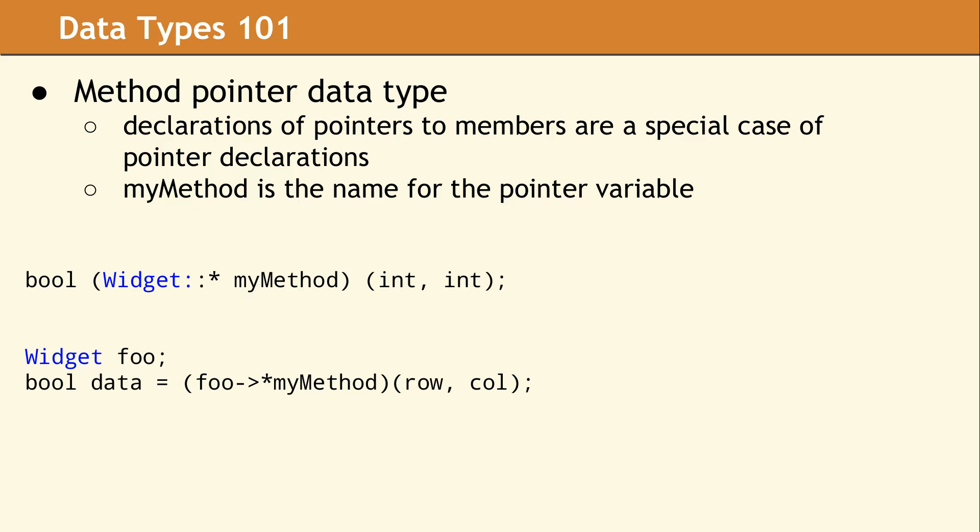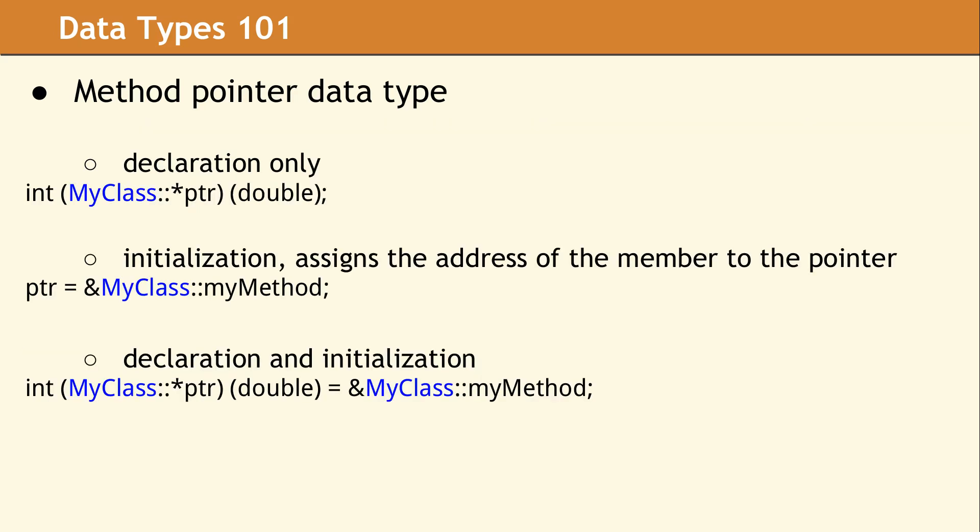Here are some more examples of method pointers showing declaring a method pointer, how to initialize it to point to a specific method, and how to do both in one step.